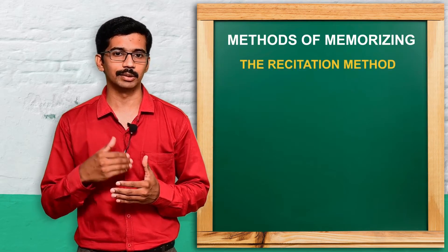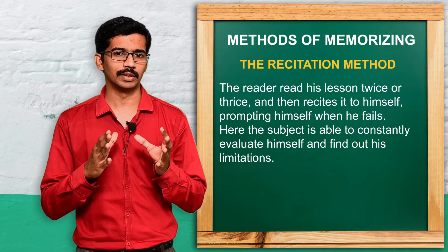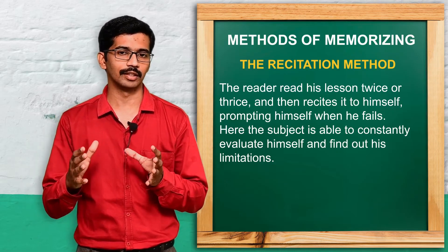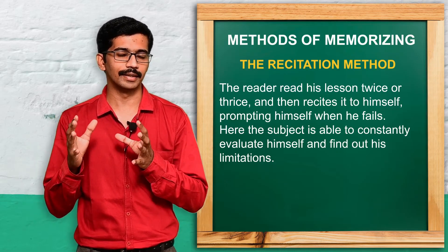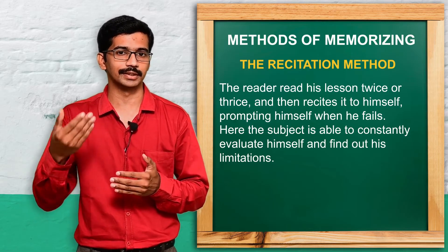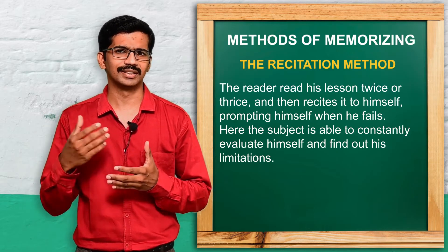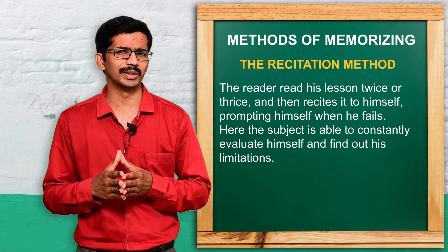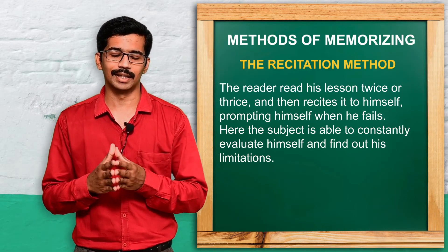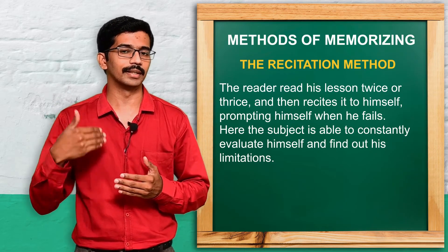The first one is the recitation method. In this recitation method, the entire material to be remembered will be learned from beginning to end. The learner will read the entire content from beginning to end, and the same thing the person himself will be reciting or repeating. Commonly, school children are using this particular method to learn a poem, an essay, or whatever they want to learn — reading from beginning to end and repeating.